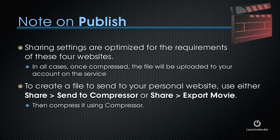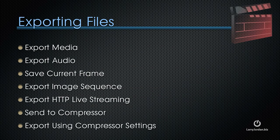The fourth category is to export a file. We can export media, export an audio file, save the current frame, export an image sequence, export for HTTP live streaming, send to Compressor, or export using Compressor settings. Exporting media changed substantially with the 10.01 release, and we'll talk about it in two different movies later in this chapter. The two Compressor menus will be covered in future training on Compressor 4.